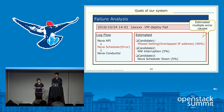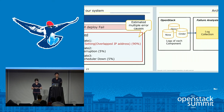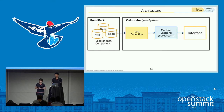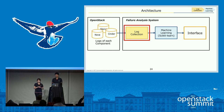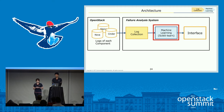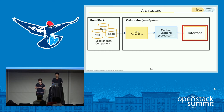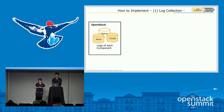By using this system, we want to accelerate the operational flow — that is, operationalization. Our system is composed of two parts: first, log collection, and second, machine learning. In the log collection part, the system collects logs of each component and creates a log unit. One log unit represents one user operation containing an error. In the machine learning phase, the system estimates the cause of the error for each log unit, and finally outputs a list of errors and causes to the operator.